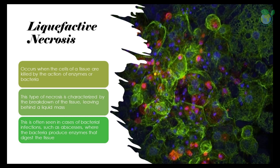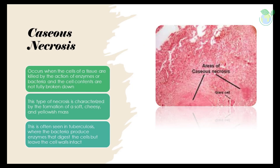Liquefactive necrosis: another common form of necrosis is liquefactive necrosis, which occurs when the cells of the tissue are killed by the action of enzymes or bacteria. This type is characterized by the breakdown of the tissue, leaving behind a liquid mass. This is often seen in cases of bacterial infections such as abscesses, where the bacteria produce enzymes that digest the tissue.